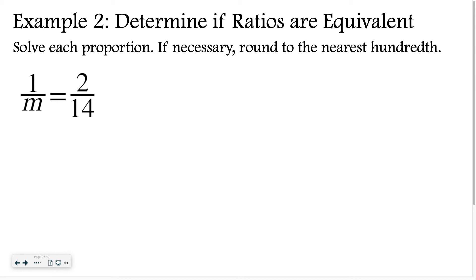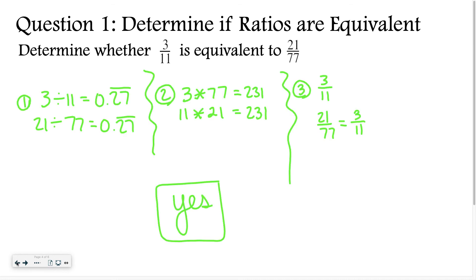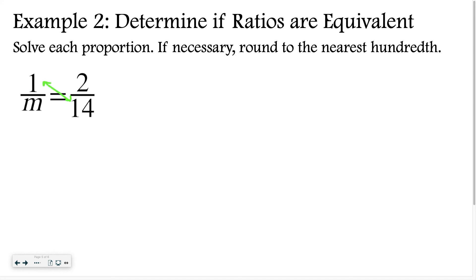All right, example two. Determine if ratios are equivalent. Solve each proportion. If necessary, round to the nearest hundredth. So this is where I use something called cross-multiply and divide. That's kind of the shortcut, but I'll walk you through it. So on the last slide, in the second method, we multiplied on the diagonals. So I'm going to do that again. I'm going to multiply on the diagonals. So 1 times 14 equals 2 times m. So 1 times 14 is just 14 equals 2m, and then I just have to think 2 times what number gives me 14? 7. So m equals 7.